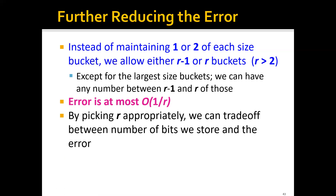We can further reduce this 50% error bound by slightly modifying the algorithm. Instead of maintaining one or two buckets of each size, we allow either r-1 or r buckets of each size, except for the largest size bucket. In this case, the error bound would be at most 1/r. By picking r appropriately, we can trade off between the number of bits we need to store and the error.